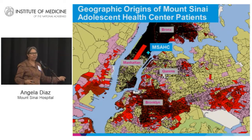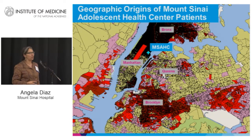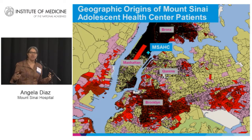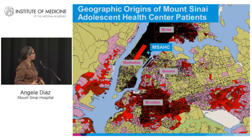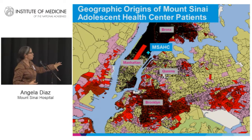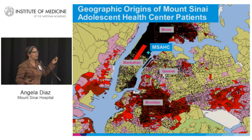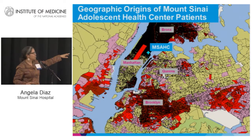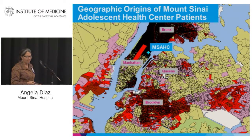This map of New York City shows where our program is, and demonstrates that if you build the program in a way that young people can use it, they will come — they travel very long distances, sometimes from five hours away. We also ensure there is accessible transportation to the site; we are close to subways and buses.